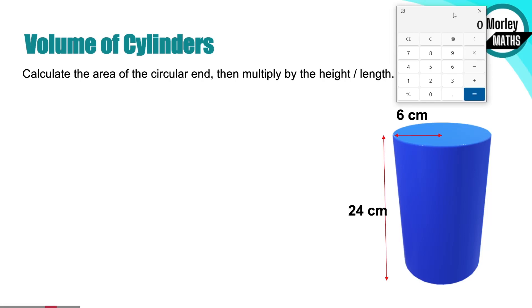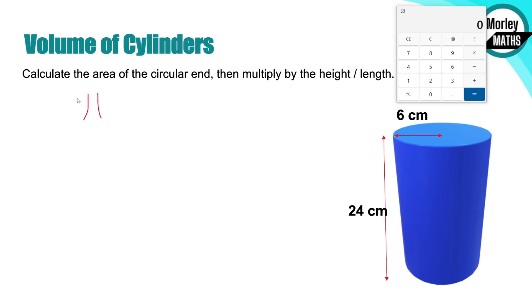Moving on, we've got cylinders - think of Pringles tubes: how much space is inside? We use the same method: find the area of the ends and times it by how far down it goes. With a cylinder we're looking at the area of a circle, which is pi r squared. For volume it's just pi r squared times h, where h is the height.